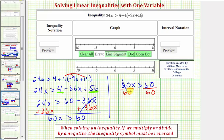60 divided by 60 is equal to one, one times x is just x. So we have x is greater than, 60 divided by 60 again is one. So this is our solution expressed using inequality notation. So we'll enter that here.